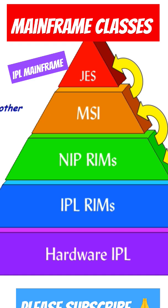IPL is the process of loading the operating system to the central storage from the DASD. Like any program, it has to be present in real storage before execution. For JOS initialization, we have some phases — each phase builds on the next, and within each phase, steps build on each other.